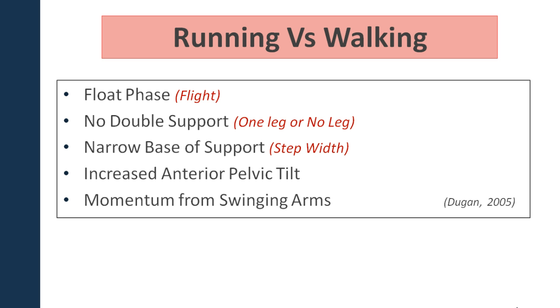Generally when you are walking, the stance phase is around 60% of the gait cycle and the swing phase is 40%, whereas in running, as the velocity increases, the stance phase becomes less and less.